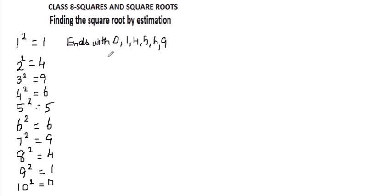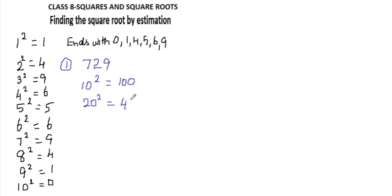First, let us consider a number to find the square root by estimation method. Let the first number be 729. In this estimation method, we are going to jump like this: 10, 20, 30 — like that. 10 square is 100, 20 square is 400, 30 square is 900. Now itself we are nearing to the answer. We know that the square root of 729 lies between 20 square and 30 square.